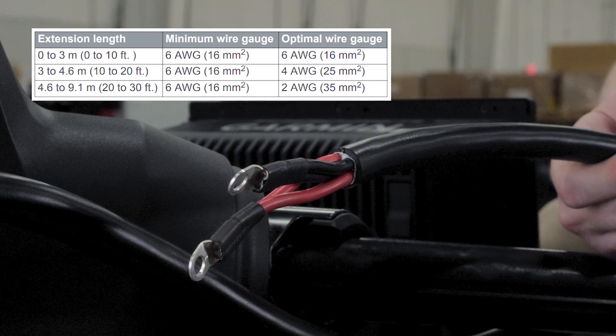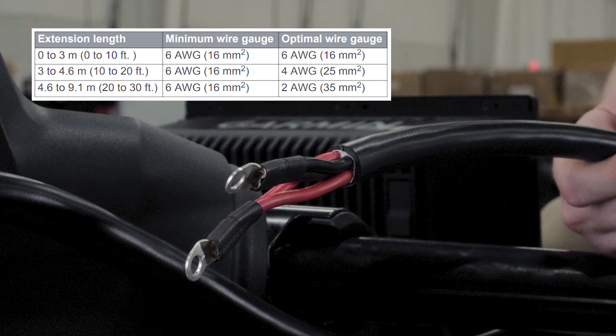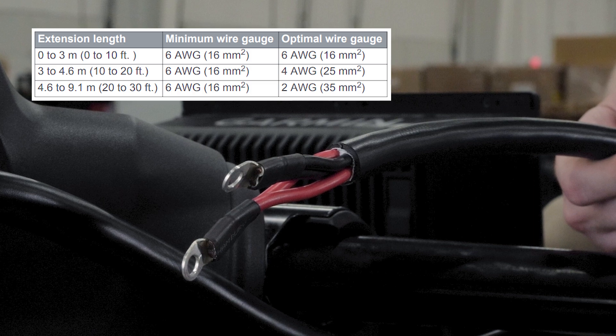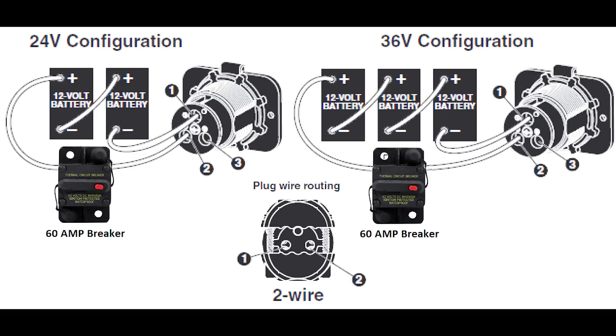Now let's connect the trolling motor to power. Route the power cable to the breaker panel or location where you plan to install the breaker. If you need to extend the power cable, use the appropriate gauge wire based on the length of the extension. A trolling motor plug and receptacle rated for 60 amps or greater where the power cable enters the bulkhead is optional. This can be purchased on our website separately with a link on screen.